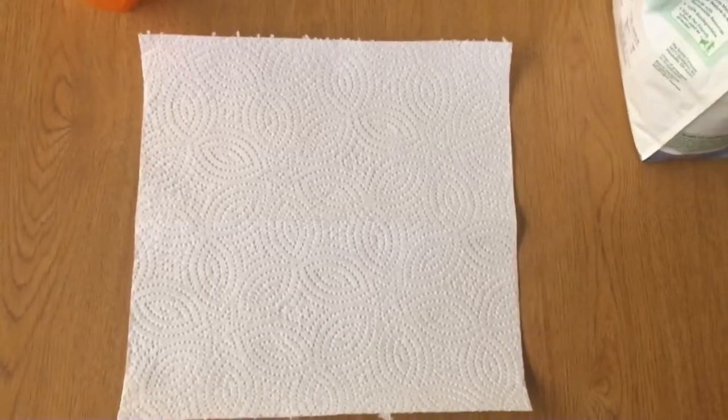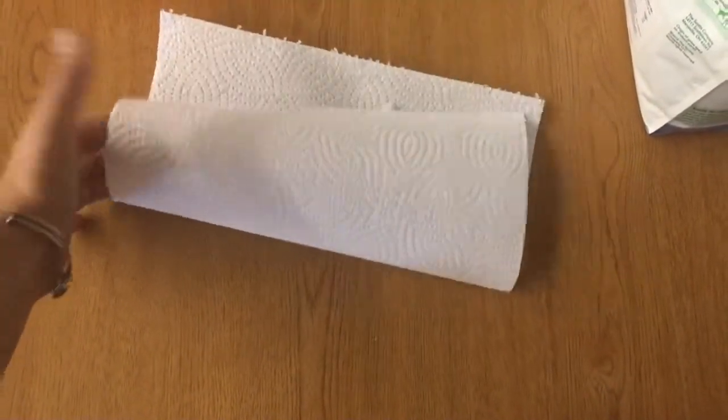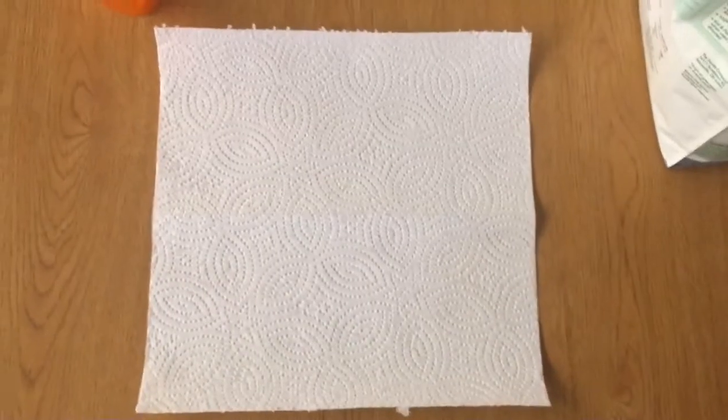Next, you will get two paper towels if they are the half-size sheets, like these, or one full-size sheet paper towel, and lay it out flat.